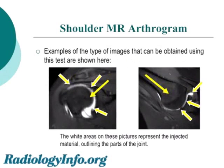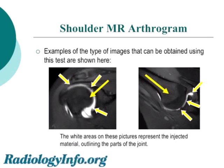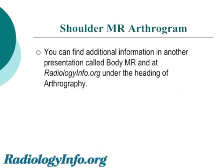Examples of the types of images that can be obtained using this test are shown here. The long arrows show the upper arm bone, or humerus, at the end near the shoulder. The short arrows show the white material representing the contrast which has been injected into the joint, outlining various structures within the joint. You'll be able to find additional information in another podcast called Body MR and at radiologyinfo.org under the heading of arthrography.